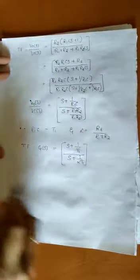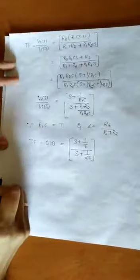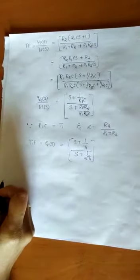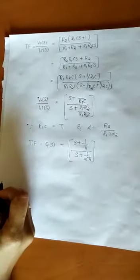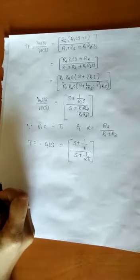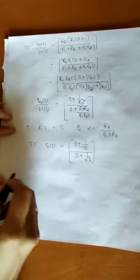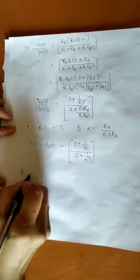As already stated, this is a lead compensating network. In a lead compensating network, the poles are always greater in magnitude compared to the zeros. Remember this — the poles are always greater than the zeros. Only then will we get a positive phase.